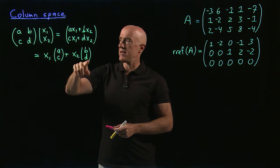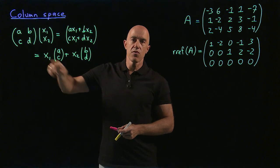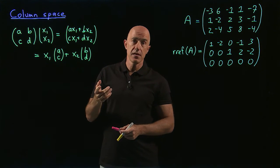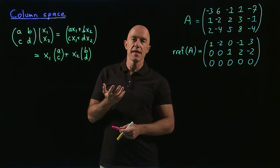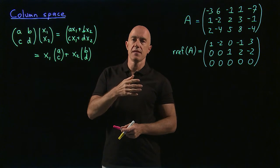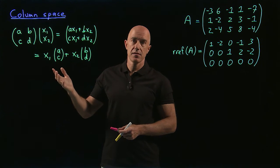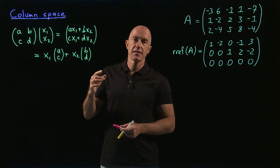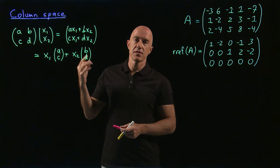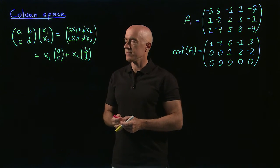This right-hand side is in the column space of the matrix. So when we write Ax equals B and assume that that has a solution, B has to be in the column space of the matrix A. Ax has to be in the column space of A — that's why the column space of a matrix is important.